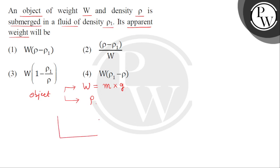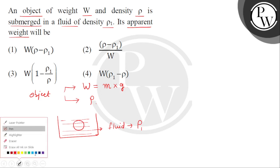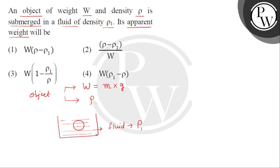So let's take the diagram. ये लिया हम लोगों ने एक container. इस container के अंदर filled है एक ऐसा fluid जिसकी density given है हमें rho 1. और इस object को हम लोगों ने submerge कर लिया. The problem is independent of the shape of the object.